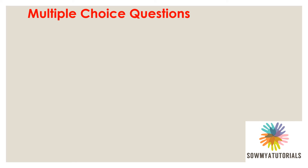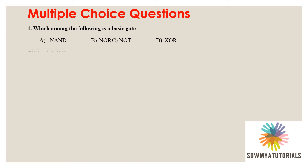The first multiple choice question: which among the following is a basic gate? Options: NAND, NOR, NOT, and exclusive OR. The basic gates are AND, OR, and NOT. Among the choices, NOT is present here. The correct answer is NOT. NAND is a derived gate, NOR is also a derived gate, and exclusive OR is also a derived gate. In this option, NOT is the basic gate.